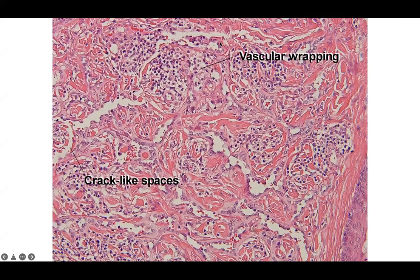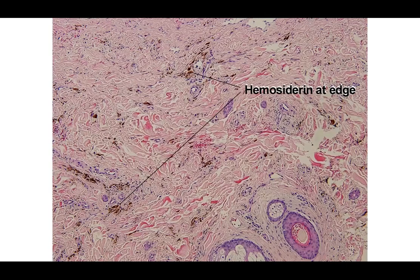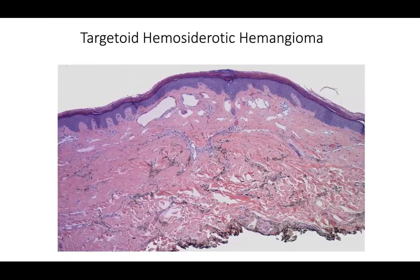You can observe a vascular wrapping phenomenon with crack-like spaces in hobnail hemangioma. These crack-like spaces may make you think of angiosarcoma, but the endothelial cells are not as atypical and there is no endothelial stacking with the high density seen in angiosarcoma. Hemosiderin is at the edge of the lesion. Putting together the clinical and histopathology, you'll make the diagnosis by looking at the distribution of dilated thin-walled vessels centrally and the peripherally located hemosiderin.